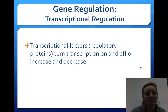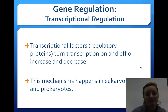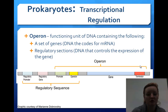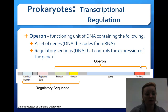Transcriptional factors turn transcription on or off, or increase or decrease it depending on what we need. This happens in both eukaryotes and prokaryotes. Prokaryotes also do transcription, and we do this with operons — sets of genes and regulatory sections that turn genes on or off.